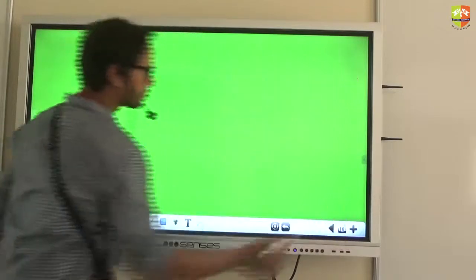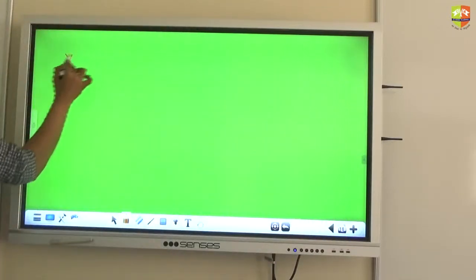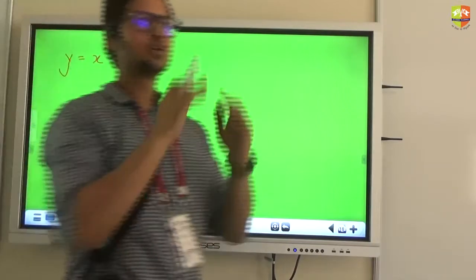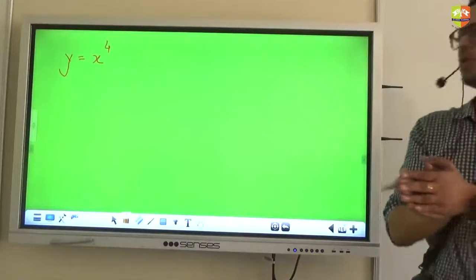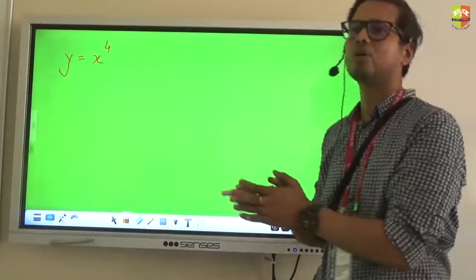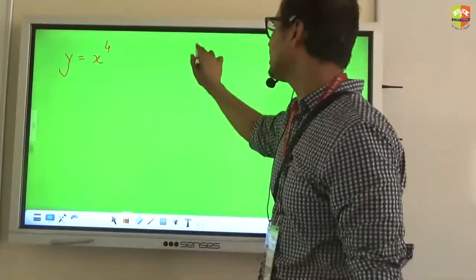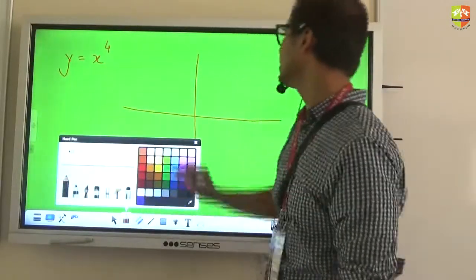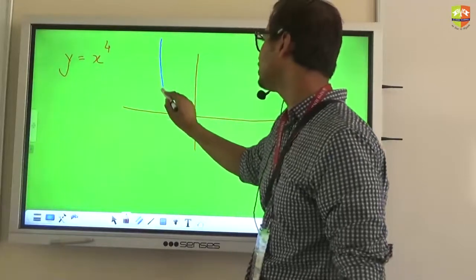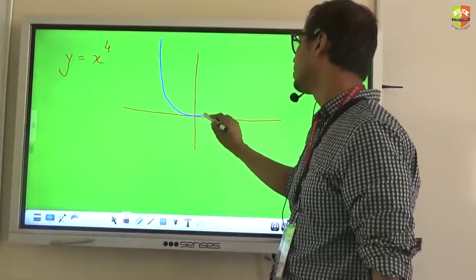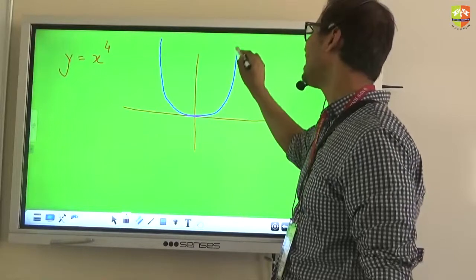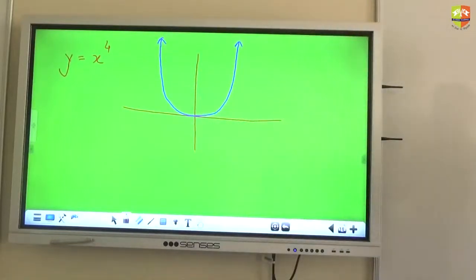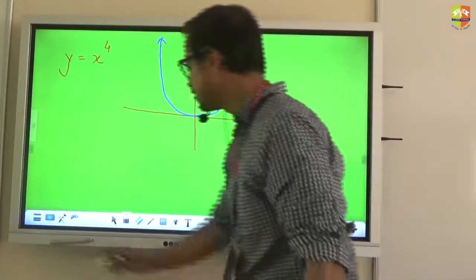Moving on. If I extend the concept to x to the power of 4 now. So quadratic we saw. Cubic we have seen just now. Now let's talk about bi-quadratic. In bi-quadratic, in fact you can try it by plotting some points. In bi-quadratic you will realize that the graph would be of a similar shape as a parabola but slightly more flatter. Flatter. Flatter at the bottom. Okay? I will show you on GeoGebra.